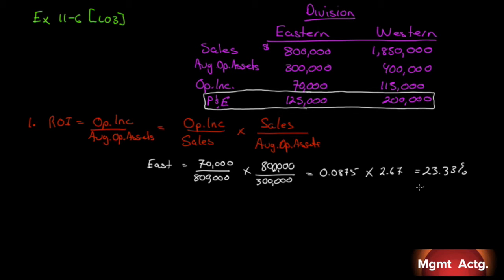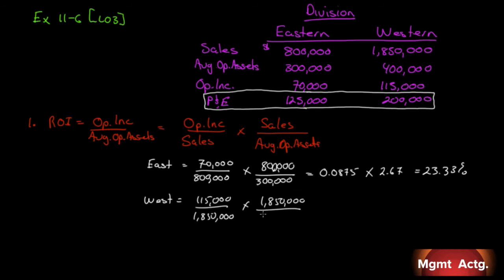For the West division: operating income is $115,000 divided by sales of $1,850,000, multiplied by $1,850,000 divided by average operating assets of $400,000. This gives us a margin of 6.216% times a turnover of 4.625, for a total return on investment of 28.75%. So ROI is better in the West.